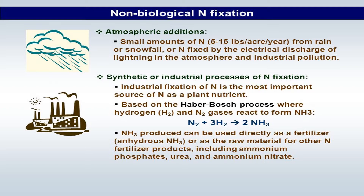In non-biological fixation, atmospheric fixation occurs via high electric discharge from lightning, which fixes nitrogen. The second type is synthetic or industrial fixation — the famous Haber-Bosch process — where hydrogen is artificially mixed with nitrogen gas to react and produce ammonia, which is later used as fertilizer.